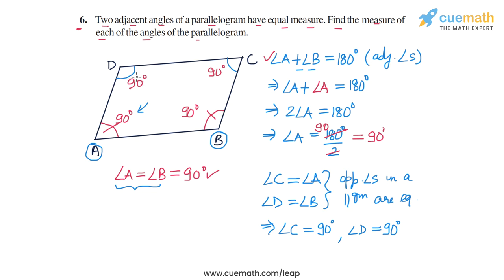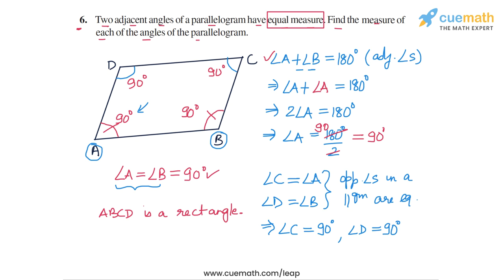This means that angle C is equal to 90 degrees and angle D is also equal to 90 degrees. So all four angles of the parallelogram are 90 degrees, and hence the parallelogram ABCD must be a rectangle. So if two adjacent angles of a parallelogram have equal measure, this can only be possible if ABCD is a rectangle, and all four angles will be 90 degrees. That completes question number 6.